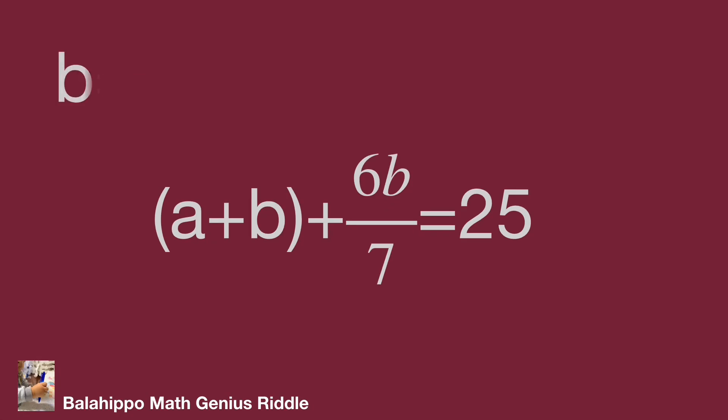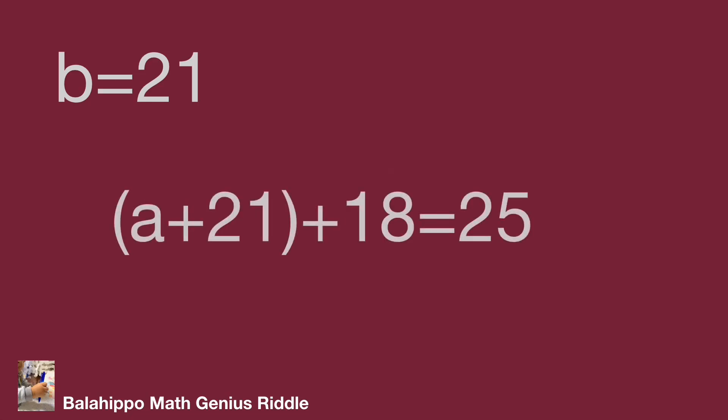When b equals 21, substitute b by 21: a plus 21 plus 18 equals 25. We also get a is a negative number, so it's not the answer. From here, if b is larger than 21, we get a will be a negative number.